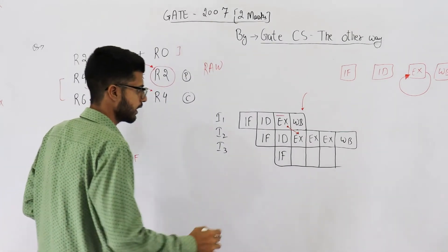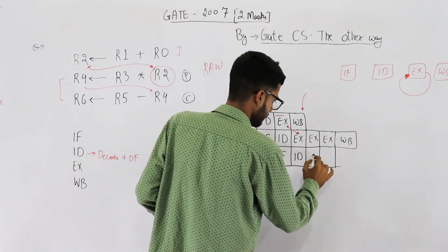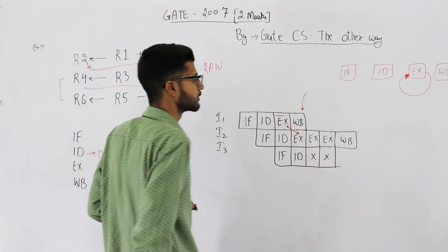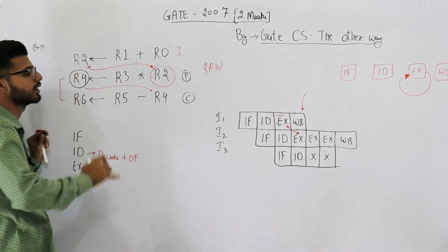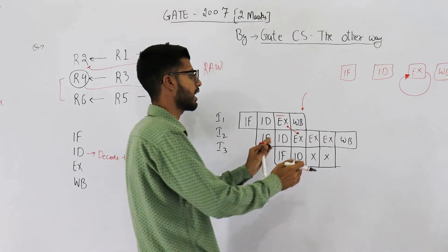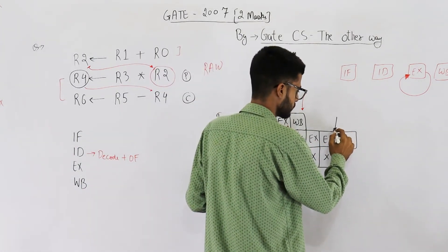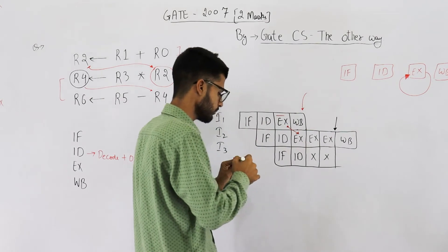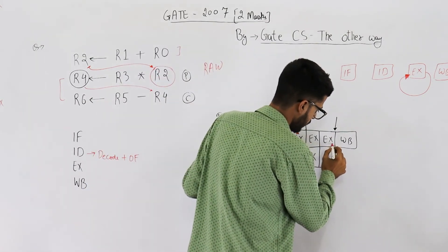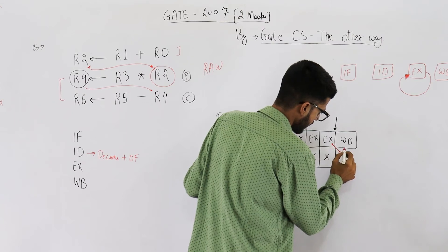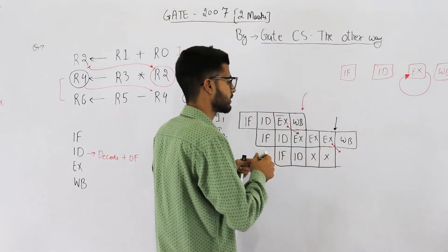Now here we are going to fetch IF, then ID. Then we need to stall for two cycles because this value R4 is only available after I2 has completed its execution, that means at this point. So from here we'll forward the operand to execute stage of the next instruction.